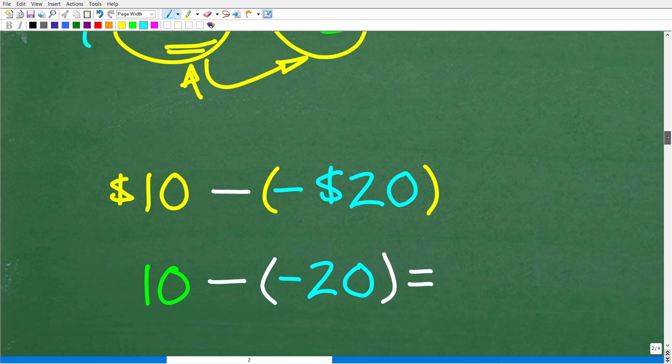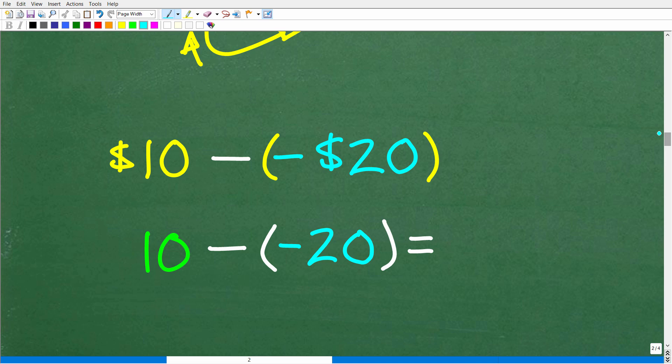Okay, so now let's get back to our problem and figure out what $10 minus a minus $20 is equal to. So here is basically the problem that we need to figure out from a mathematical standpoint. So that is $10 minus a minus $20. So what does this mean? Well, again, we have a subtraction operator here, so we could turn this into a plus negative. So this is the same thing as $10 plus a negative of a negative $20.